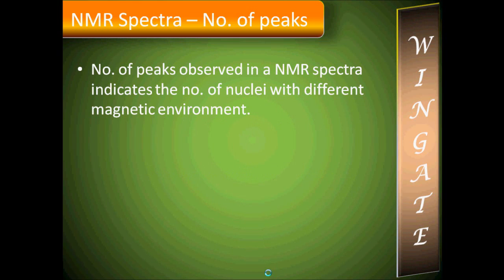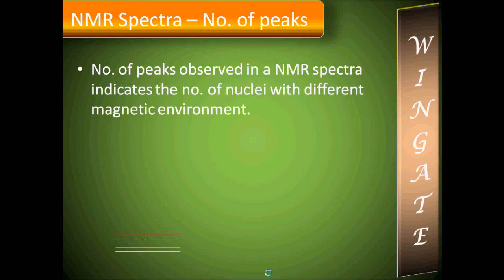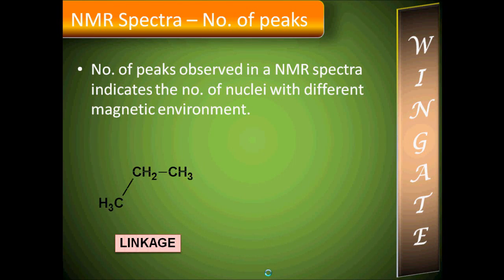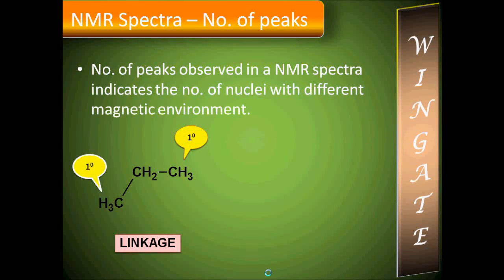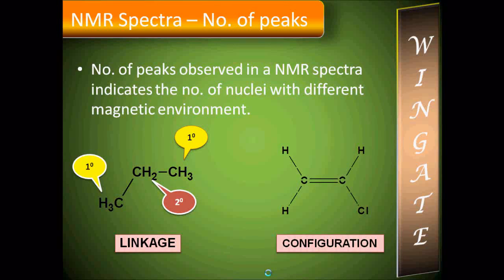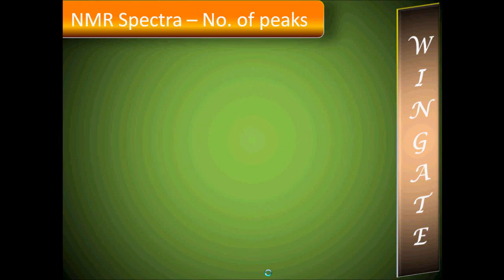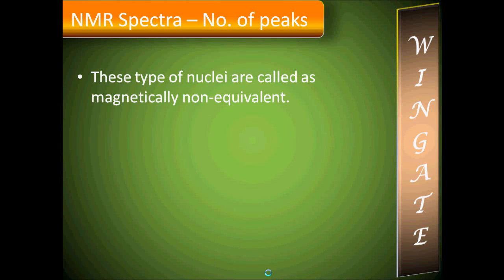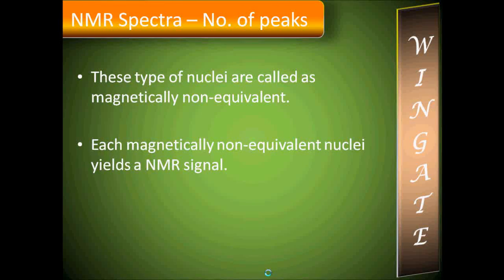The number of peaks observed in NMR spectra indicates the number of nuclei with different magnetic environments. The magnetic environment is determined first by linkage — for example, primary protons versus secondary protons. Another aspect is configuration: one proton may be cis to chlorine and another trans to chlorine. These types of nuclei are called magnetically non-equivalent nuclei, and each magnetically non-equivalent nucleus gives one NMR signal.